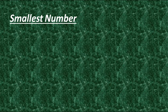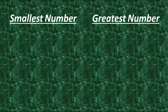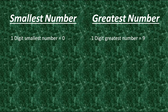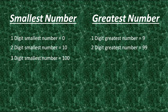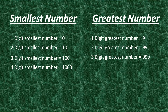Before moving to the questions, we will discuss about smallest and greatest numbers according to digits. As everyone knows, the one-digit smallest number is 0 and the one-digit greatest number is 9. After 9, two-digit numbers start. So, the two-digit smallest number is 10 and the two-digit greatest number is 99. After 99, three-digit numbers start. So, the three-digit smallest number is 100 and three-digit greatest number is 999. Same way, the four-digit smallest number is 1000 and the four-digit greatest number is 9999.